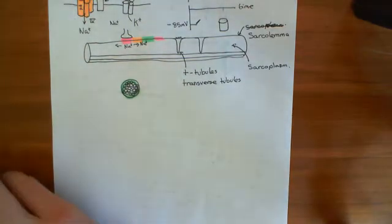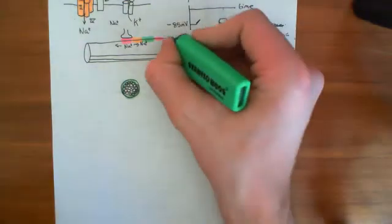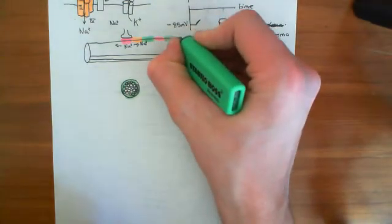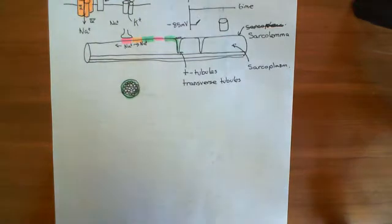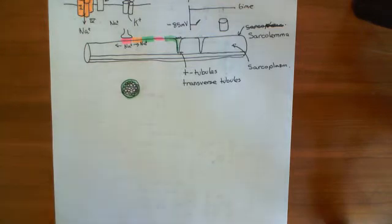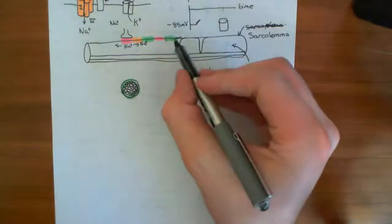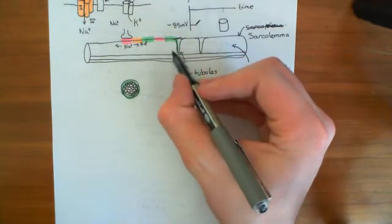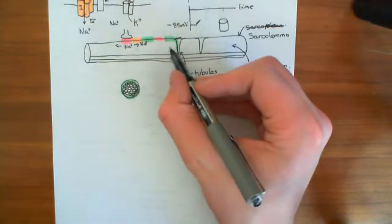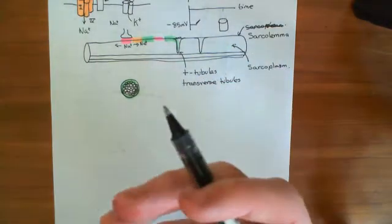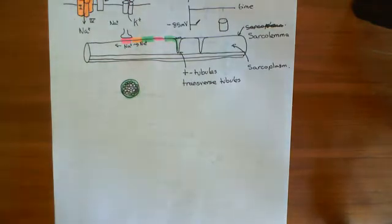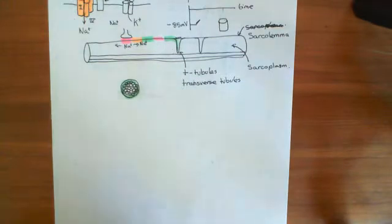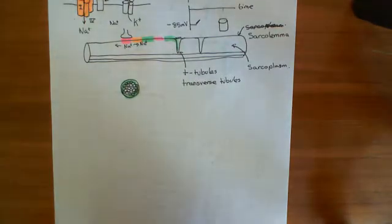So what's going to happen is that the action potential is going to continue conducting along the sarcolemma and go down into the T-tubules. And in the T-tubules is where the electrical activity along the sarcolemma is going to be transduced into a calcium signal. That's why this topic is in a playlist on calcium signalling — you have this electrical signal being transformed into a calcium signal.